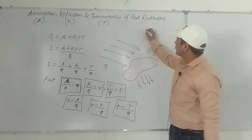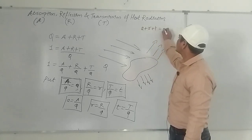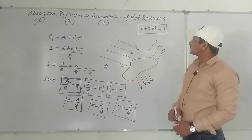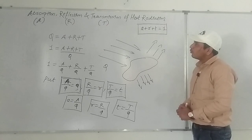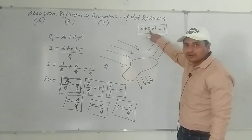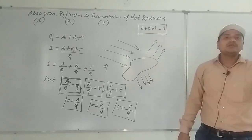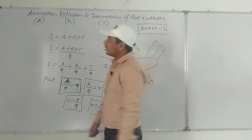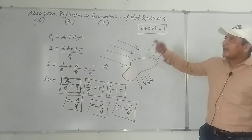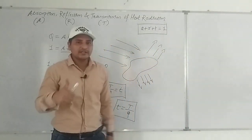From the above equation, small a plus small r plus small t is equal to 1. That means the coefficient of absorption plus the coefficient of reflection plus the coefficient of transmission equals unity. This is the concept of absorption, reflection and transmission of heat radiation. Thank you.